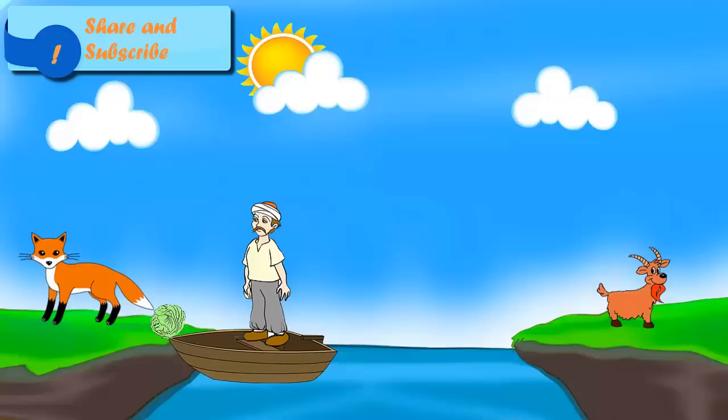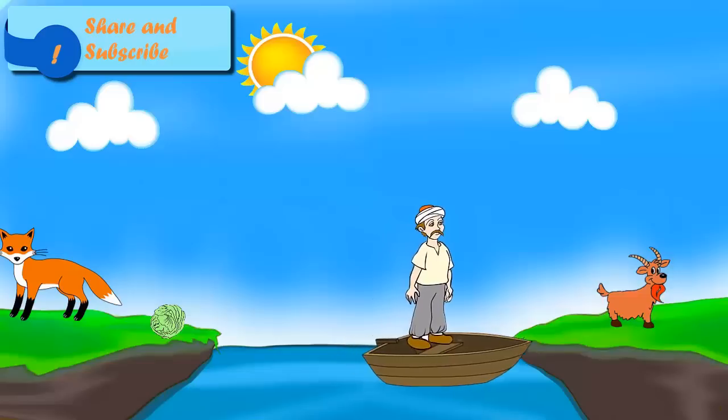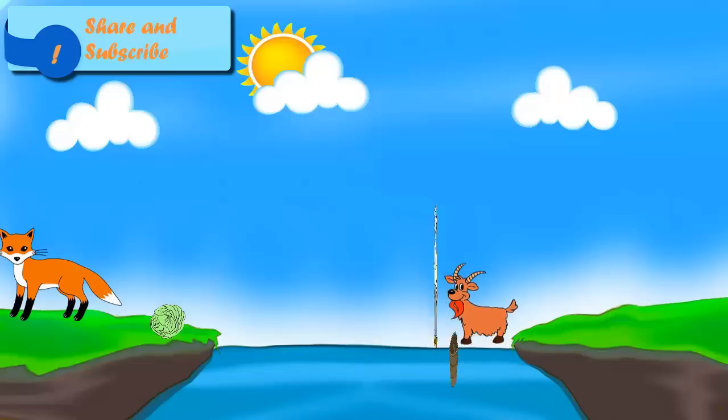The farmer then leaves the fox with the cabbage at the village end and makes his last trip back to the city end. He then takes the goat with himself and rows back to the village end.